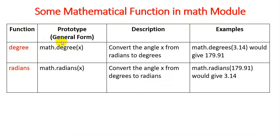So degree function name, the prototype is math.degrees(x). Convert the angle x from radians to degrees. For example, math.degrees(3.14) would give 179.91.